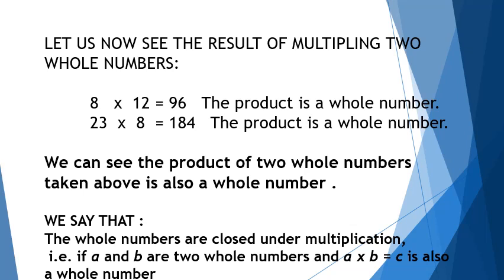Here we can conclude that the whole numbers are closed under multiplication. That is, if a and b are two whole numbers and a multiplied by b equals c, then a can be any whole number, b can also be any whole number, and c — the product — is also a whole number.